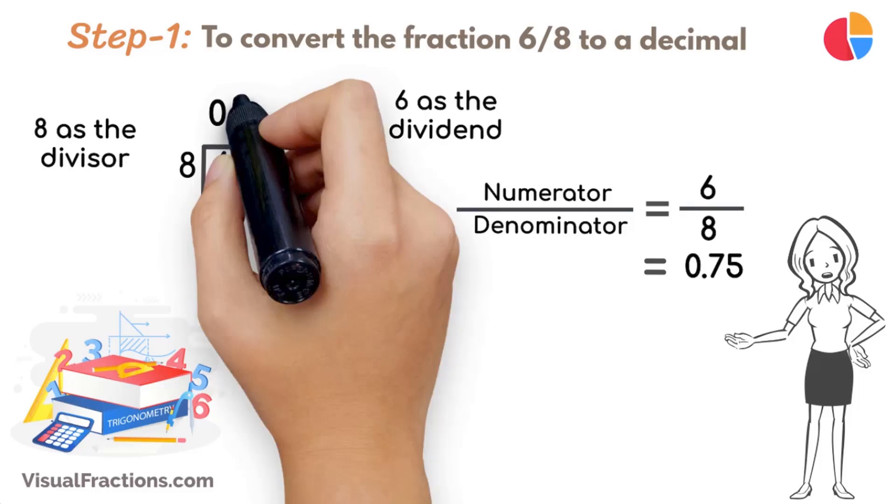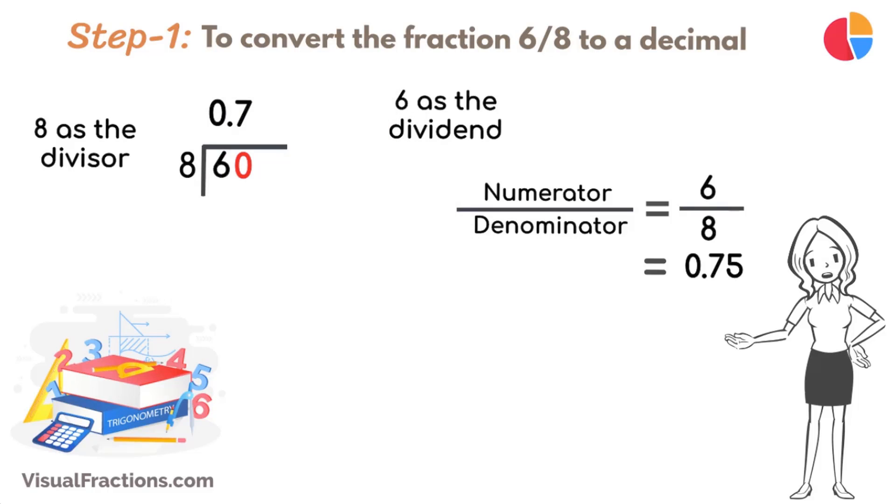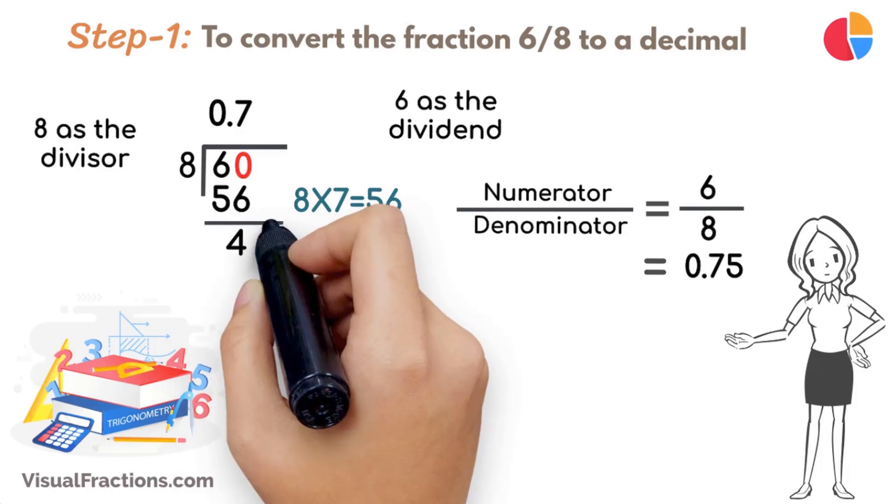8 goes into 60, 7 times, putting 0.7 in our quotient. Multiply 8 by 7 to get 56, and subtract this from 60, leaving a remainder of 4.